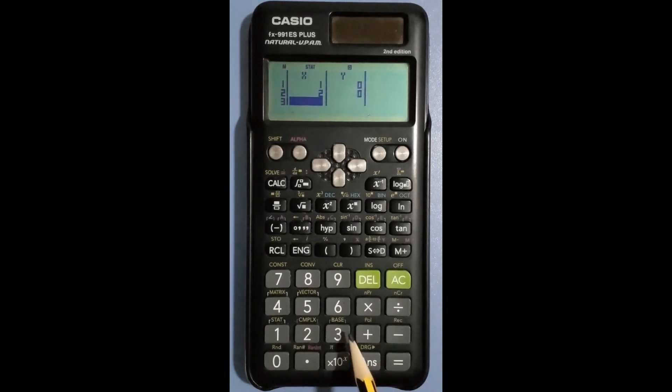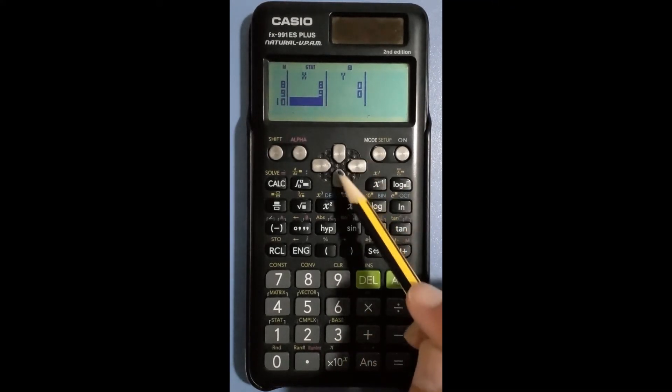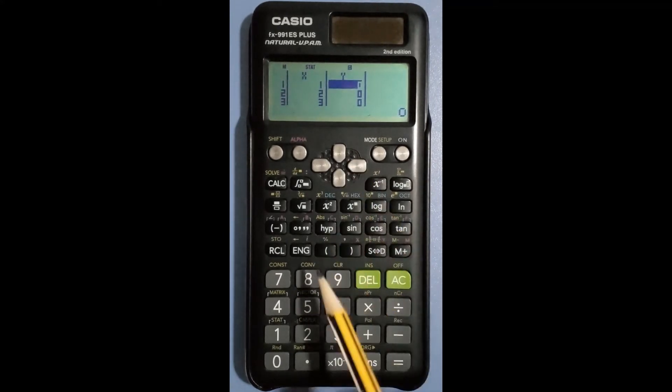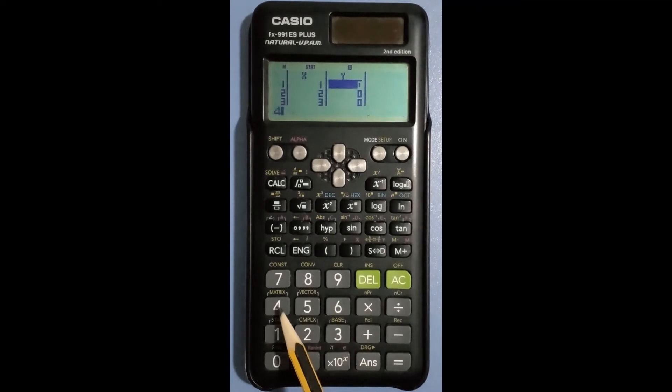Continue until X equals 9. Then use the arrow key to switch to the Y column to enter the Y values. The first value of Y is 44, so type 44 then press enter.